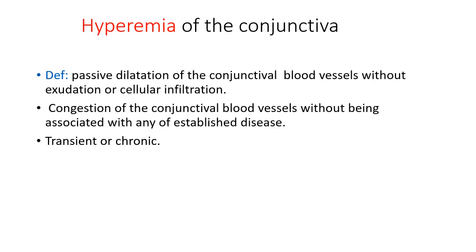Hyperemia of the conjunctiva is passive dilatation of the conjunctival blood vessels without exudation or cellular infiltration. Congestion of the conjunctival blood vessels without being associated with any established disease is called hyperemia of the conjunctiva. The eye looks red — the patient can come with the main complaint of redness. It can be transient or chronic.